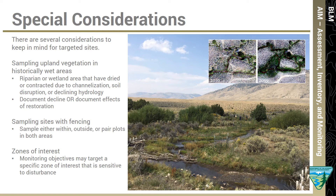Lastly, there are several considerations to keep in mind for targeted sites. A targeted site may be selected in a potential restoration area where riparian or wetland vegetation has contracted or dried due to channelization, soil disruption, or declining hydrology. In these instances, a targeted monitoring site may be installed that extends into upland vegetation in order to track change in response to restoration activities or other management actions, like this site on Holly Creek in Idaho. Other considerations include sampling within or outside fence exclosures, or selecting specific zones of interest within larger wetland complexes. For more information, please read section 3.4 in the protocol.